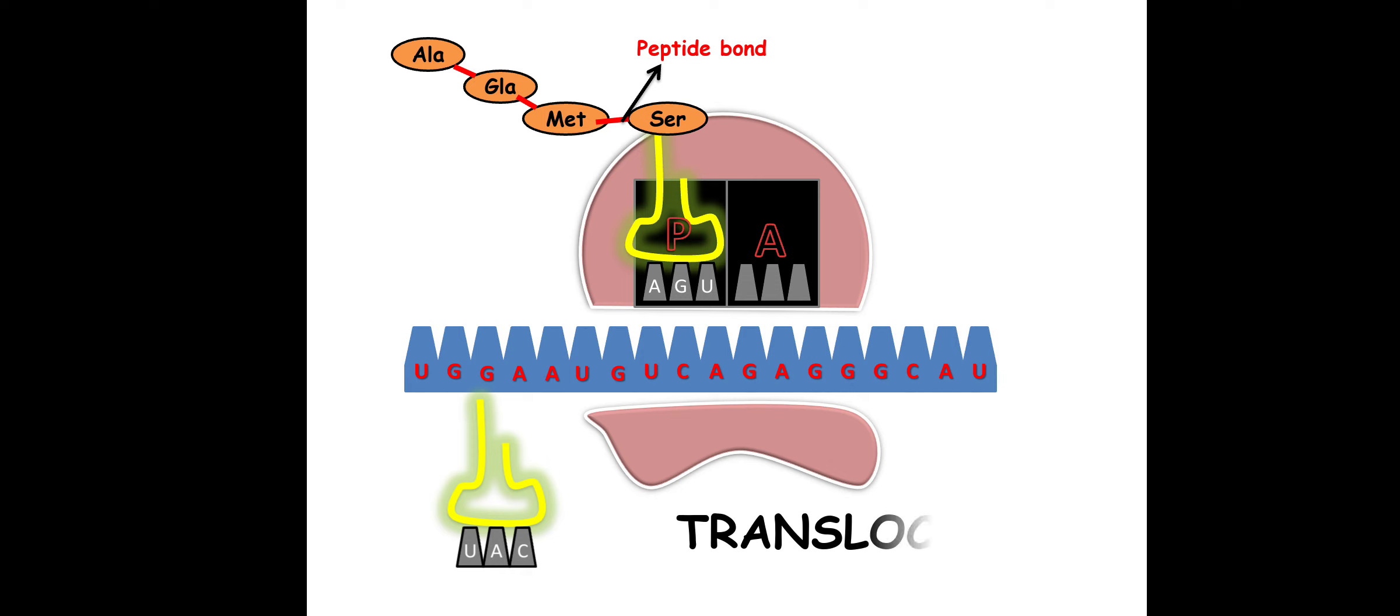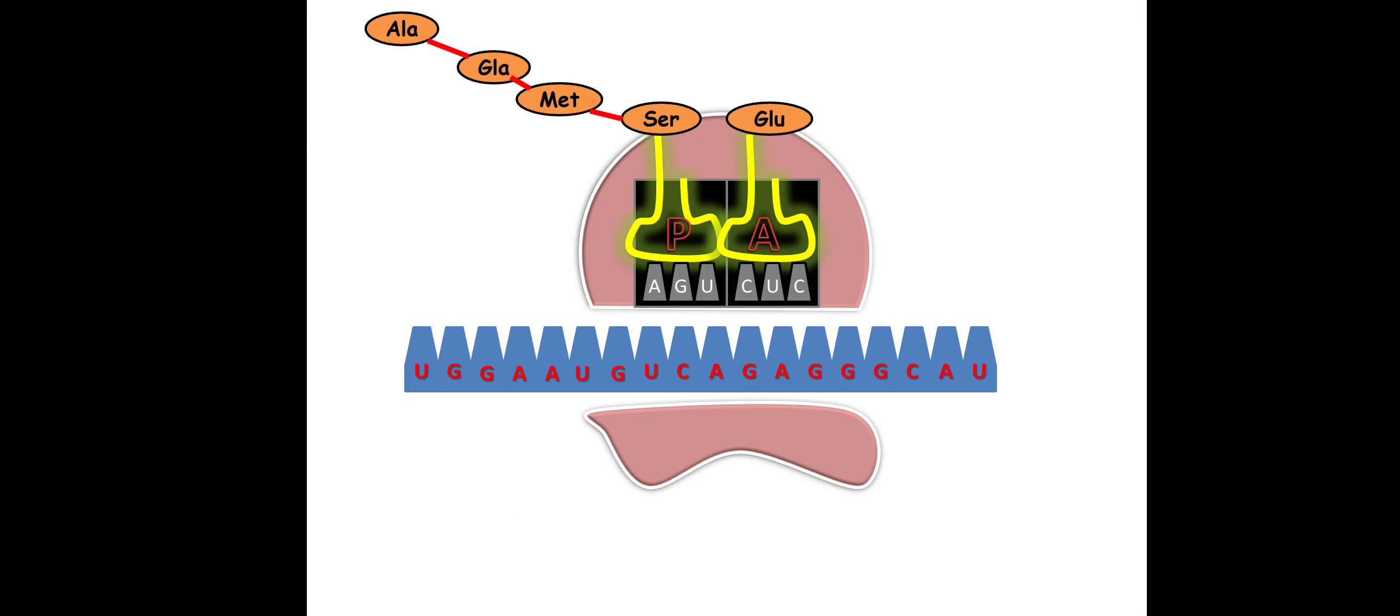This step is basically known as translocation. So what happens is translocation occurs and all the amino acids are shifted to P site, so basically A site becomes free. Next, a new tRNA comes and it will attach to A site, and in this manner the protein synthesis continues.